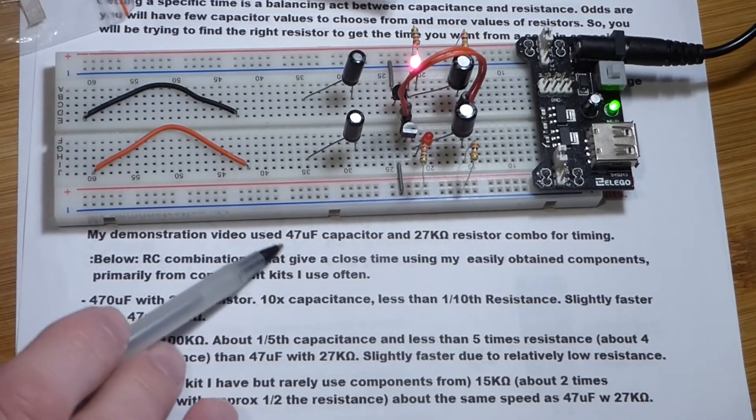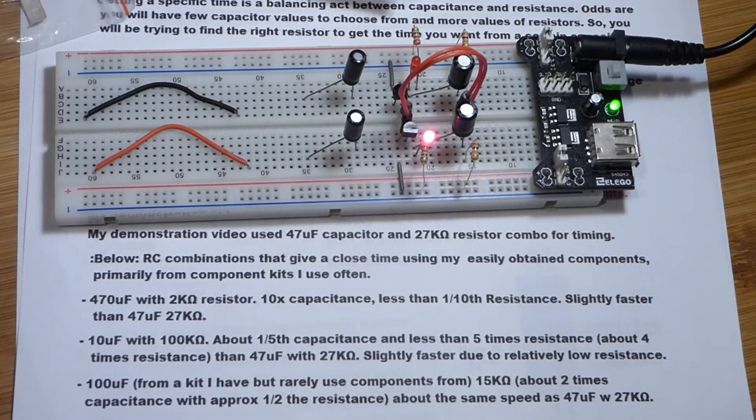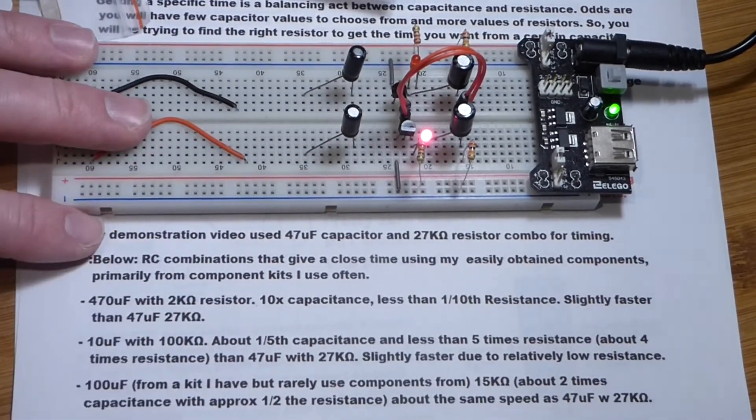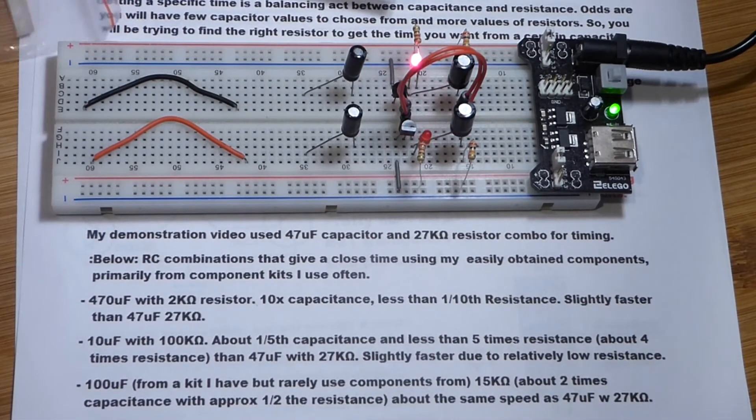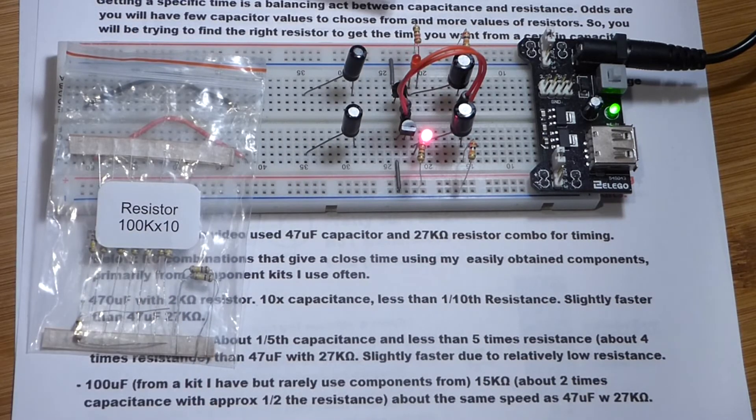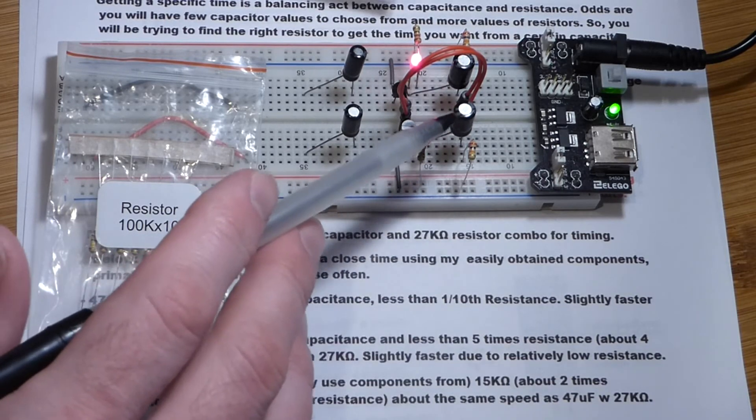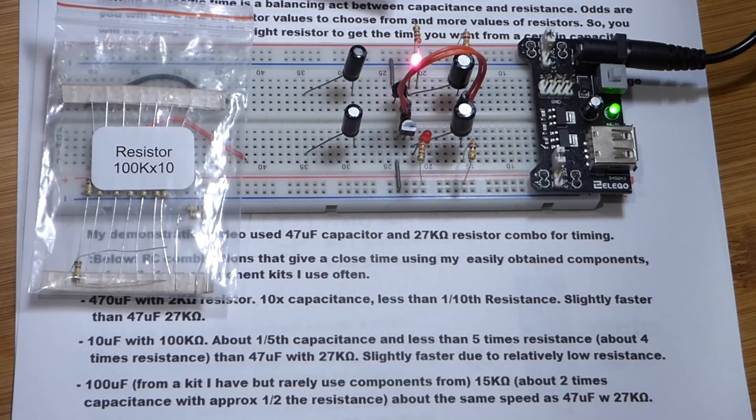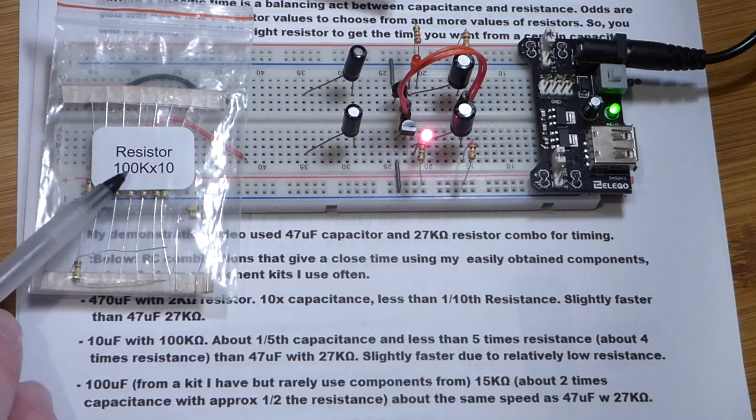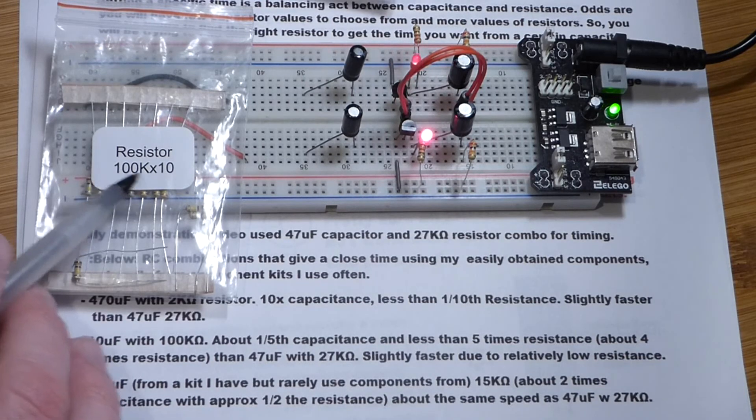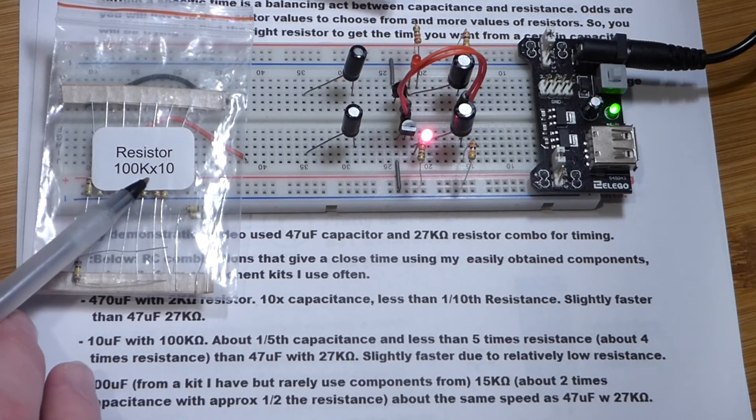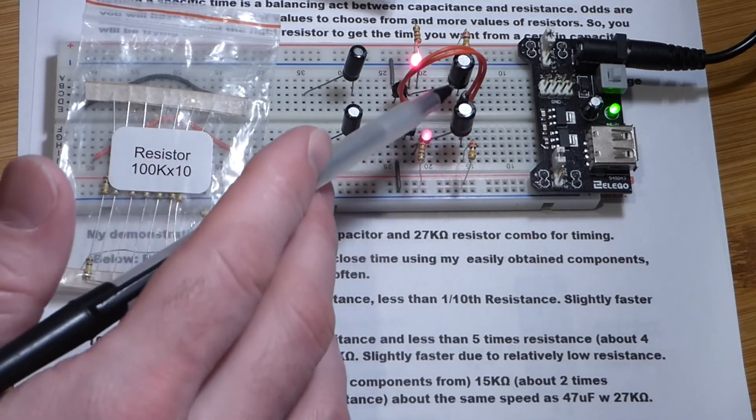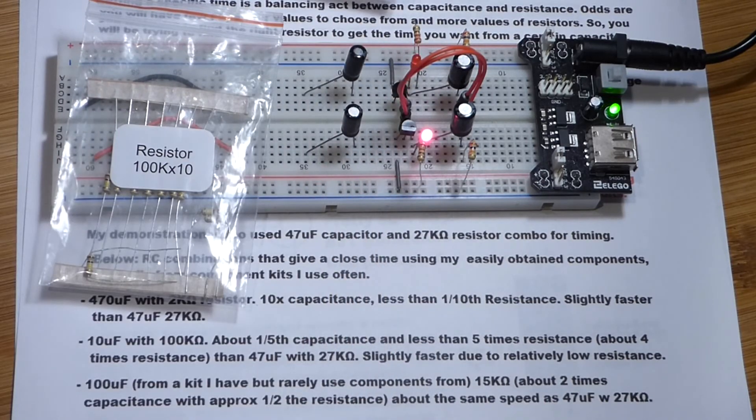So now, I have the 47 microfarad capacitors back on there with the 27 kiloohm resistors back on there, too. And now, here we have 10 microfarad capacitors. Down here, 10 microfarad. And with the resistors I have from this kit, 10 microfarads is pretty much one-fifth of the capacitance of 47 microfarad. So if we want the same speed, then we would want 5 times the resistance. And 27 times 5, 27 kiloohms times 5, is close to 125 kiloohms. I don't have one in that range. This is the closest value I have, 100 kiloohms. So this will be slightly less than one-fourth of the resistance. When I swap the two capacitors and the two resistor values, we should see that it goes slightly faster.